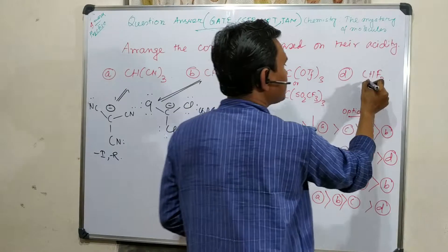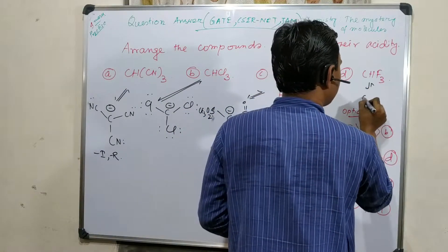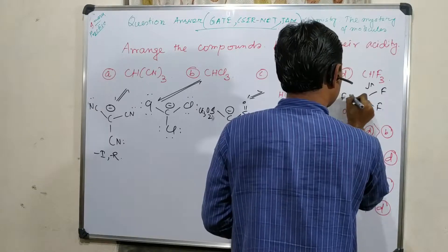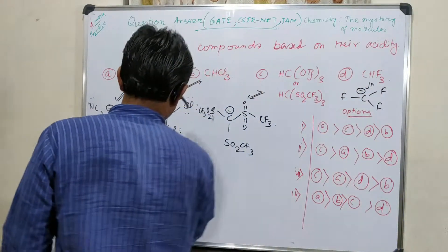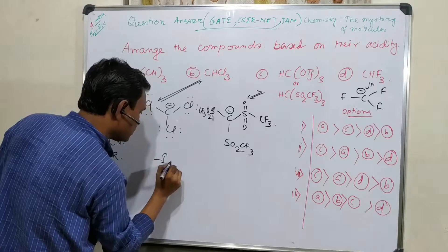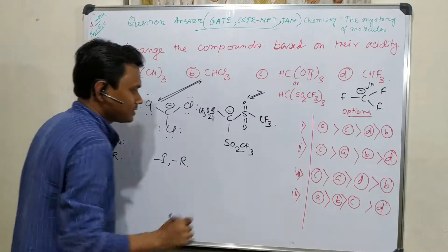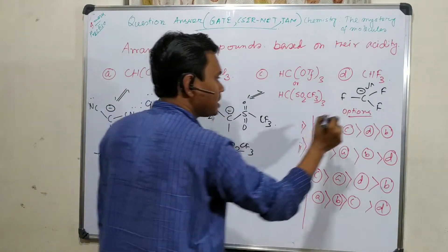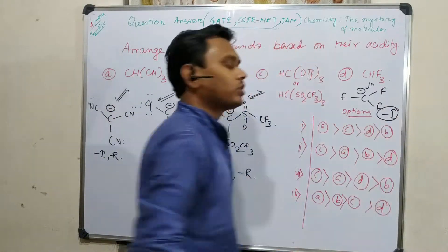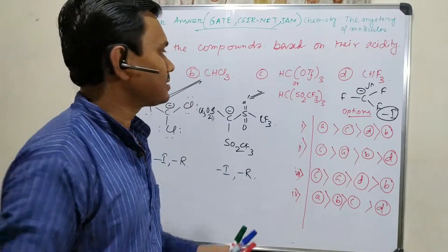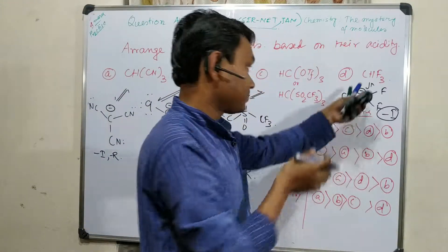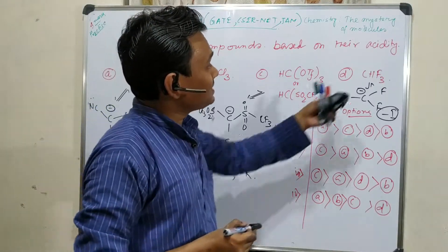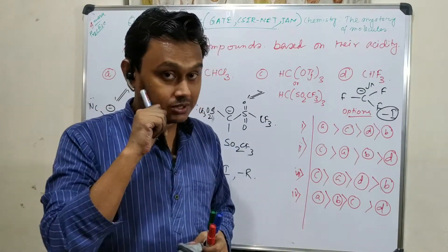Here in the carbon of this compound, both minus-I and minus-R operate. Here, only minus-I operates. So from initial understanding, we can say this compound with only minus-I will be the least acidic. But there is a twist.